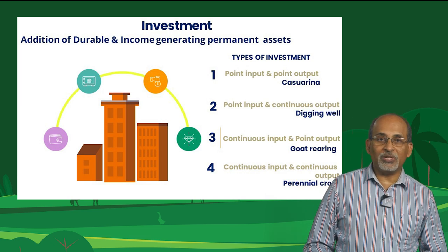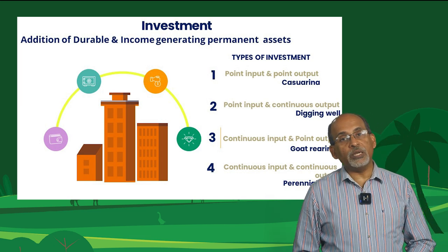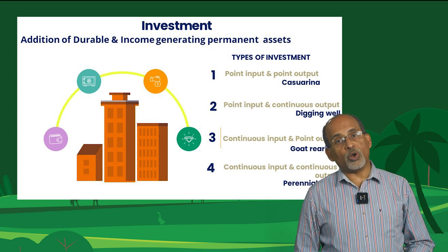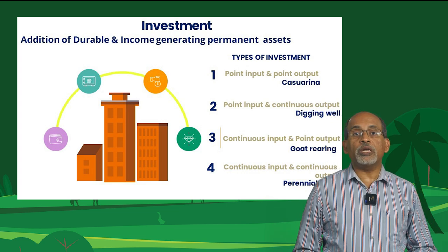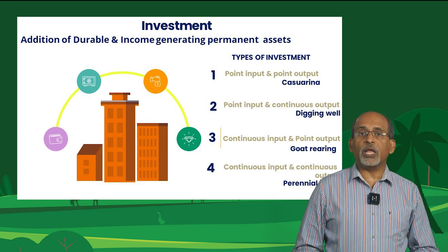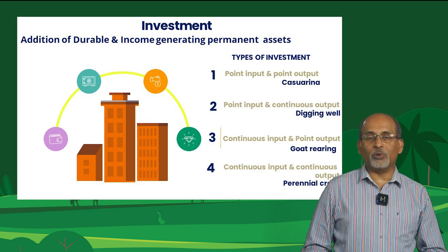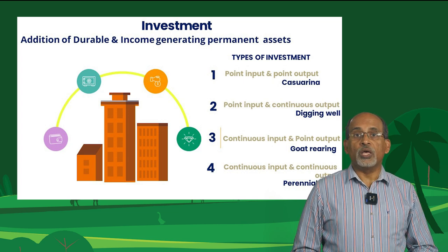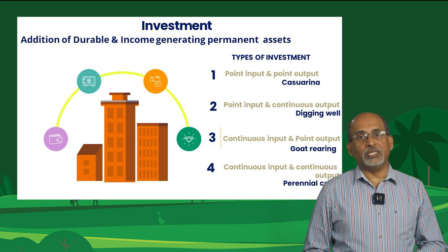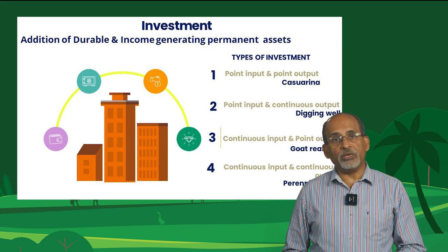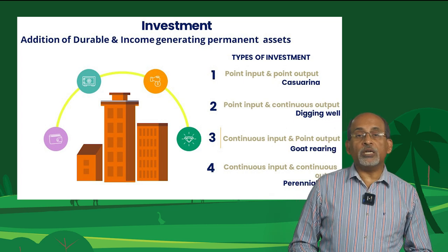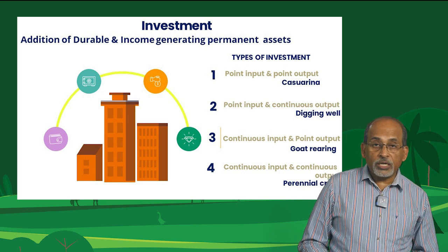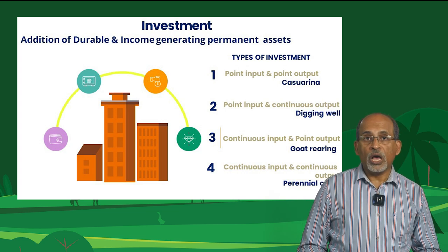The fourth type of investment is continuous input and continuous output. For example, plantation crops, orchards, or perennial crops. In the case of plantation crops or perennial crops, once these trees or palms reach the bearing age, which may be three to seven years, then we will obtain continuous output and income. That is why it is called continuous input and continuous output.